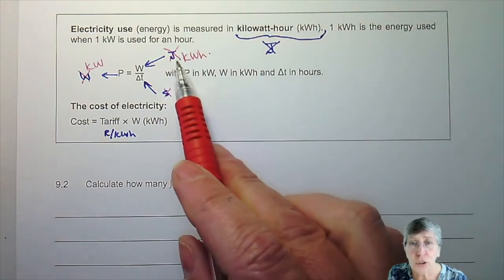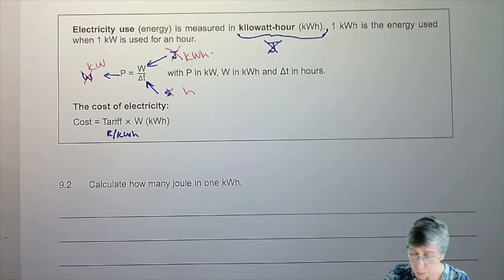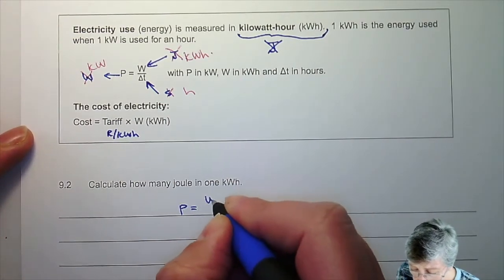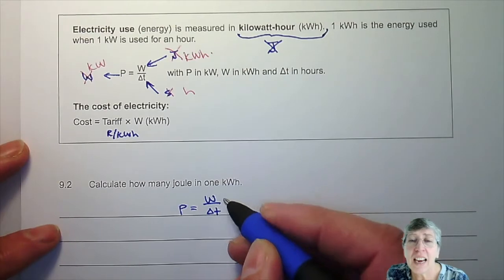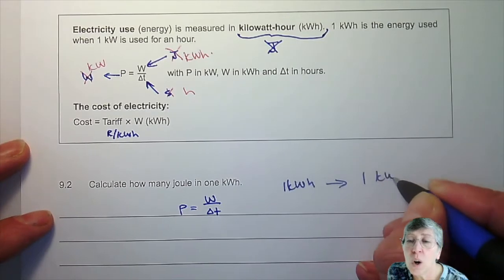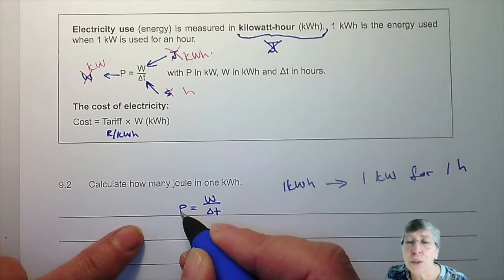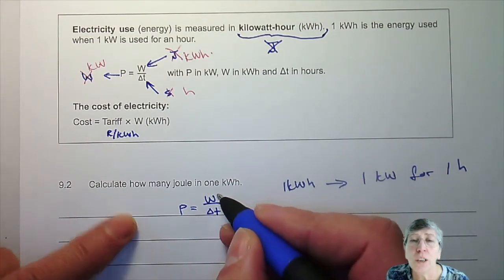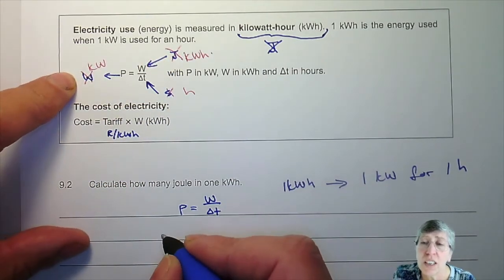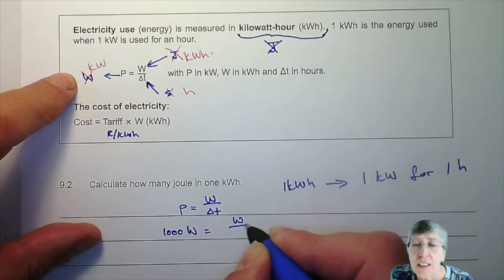Since we're not using joules, let's find out how many joules are in one kilowatt hour. Using P equals W over delta T, when the energy is one kilowatt hour it means one kilowatt for one hour. So we are going to put P as one kilowatt.